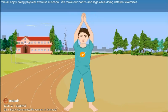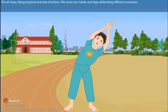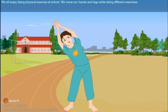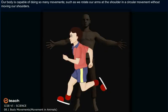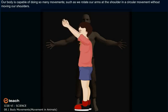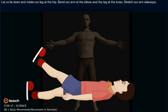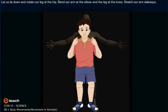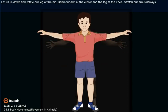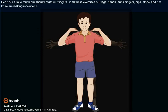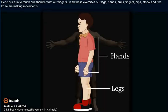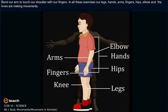We all enjoy doing physical exercise at school. We move our hands and legs while doing different exercises. Our body is capable of doing so many movements, such as rotating our arms at the shoulder in a circular movement without moving our shoulders, rotating our leg at the hip, bending our arm at the elbow and the leg at the knee, stretching our arms sideways, and bending our arm to touch our shoulder with our fingers. In all these exercises, our legs, hands, arms, fingers, hips, elbow, and knee are making the movements.